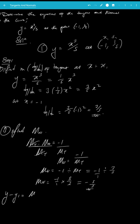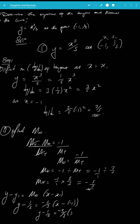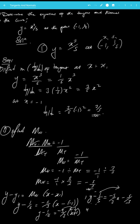With this gradient we find the equation of the normal using y - y1 = mn(x - x1). So y - 1/5 = (-5/3)(x - (-1)), giving y - 1/5 = (-5/3)(x + 1). Expanding: y - 1/5 = (-5/3)x - 5/3. Moving 1/5 across gives y = (-5/3)x - 5/3 + 1/5.